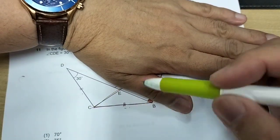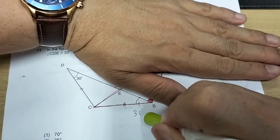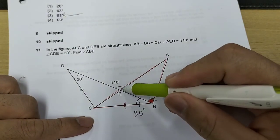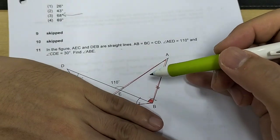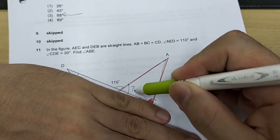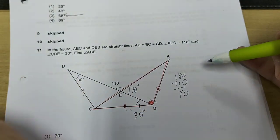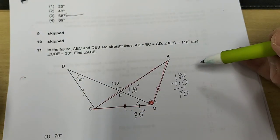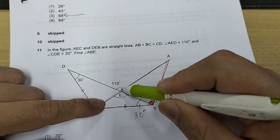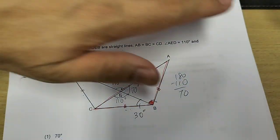Now, this 110, this angle is on a straight line. I can find out this angle is 70 degrees. 180 minus 110 is 70. I can also find out what is this angle. Vertically opposite angles are the same. It's 110 degrees.